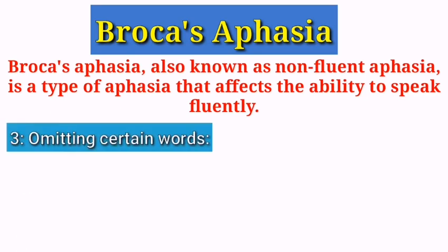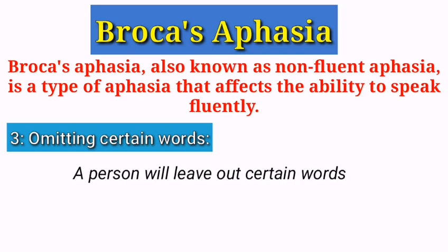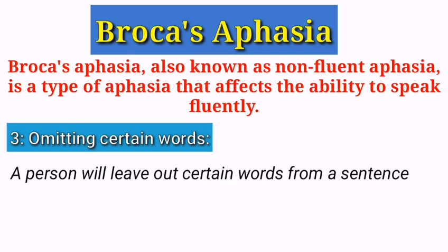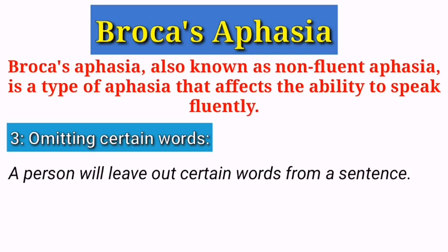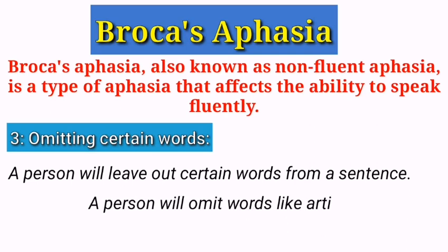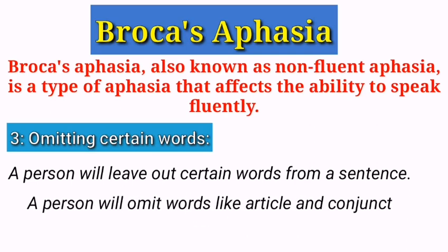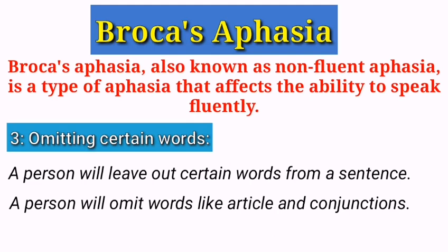Another symptom is omitting certain words. Omitting certain words in aphasia means that a person with this aphasia may leave out certain words when speaking. A person having this aphasia will omit words like articles, conjunctions, etc. from a sentence.